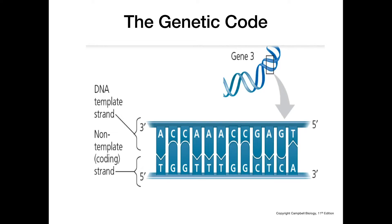The genetic code is based on units of three. A unit of three bases is called a codon on our mRNA. When the ribosome reads a codon, it determines what amino acid to incorporate into the growing polypeptide strand.